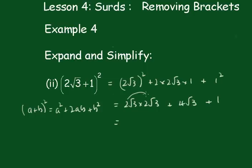Now, 2 times 2 is 4, and √3 by √3 is √3 squared, which is 3, plus 4√3, plus 1. Now, 4 times 3 is 12, plus 1 is 13, so the final answer is 13 plus 4√3.